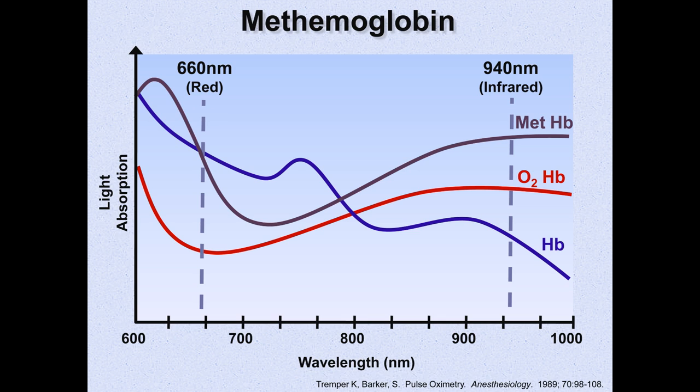Since conventional pulse oximetry uses only two wavelengths of light, it is not accurate in the presence of significant levels of methemoglobin. Increasing methemoglobin levels will lead to lower O2 sats on pulse ox until it asymptotically approaches 85% once methemoglobin reaches the mid-20s.